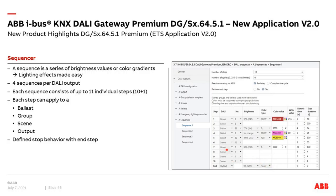In each sequencer step you can assign a group (e.g., group 6), a scene (e.g., scene 3), a ballast (e.g., ballast address 36), or the complete output. You can enter the brightness value, and if it's a color device type 8, you can click to open a color picker and select the color (e.g., yellow or purple), or enter the color temperature (e.g., 3000 Kelvin warm white). Another parameter is the dimming time — for example, within 4 seconds ballast 36 reaches 77% brightness at 3000 Kelvin.